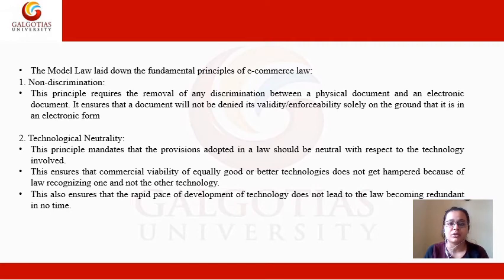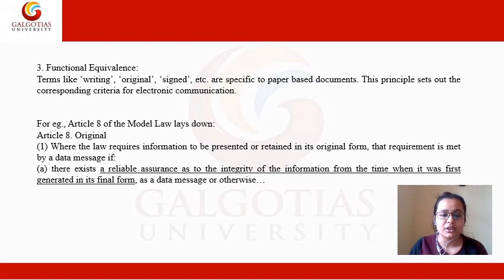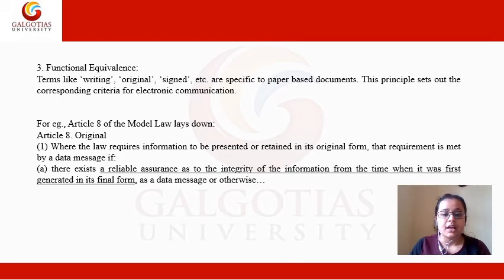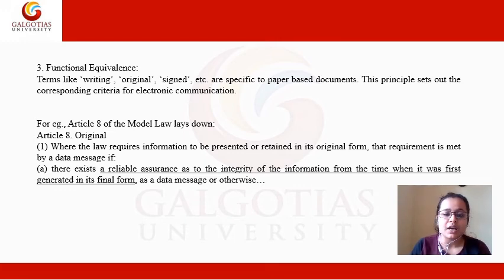So the first is non-discrimination, the second is technological neutrality, and moving forward the third is known as functional equivalence. When it comes to paper-based documents, you must have heard terms like: the document should be in writing, the document should be original, the document should be signed, the document should be stamped. This principle of functional equivalence lays down that such terms will not affect any electronic communication — it sets out corresponding criteria for electronic communication. Terms like writing, stamped, signed, original, etc. are specific to paper documents and will not create any problems for electronic documents.